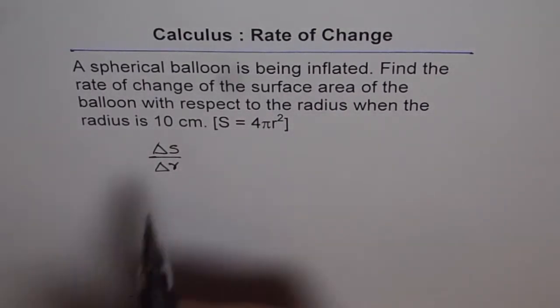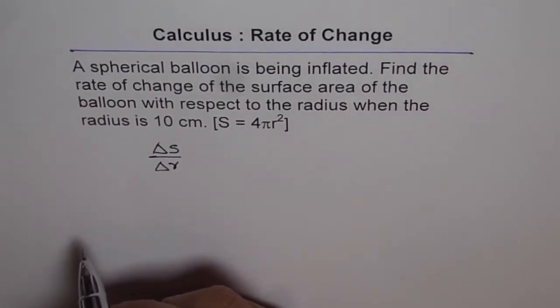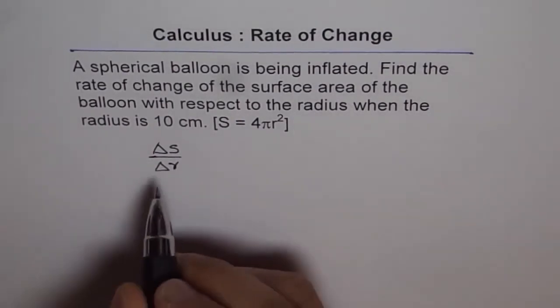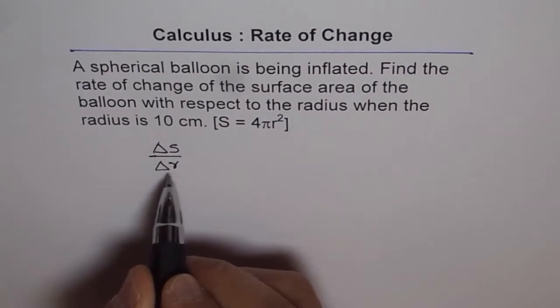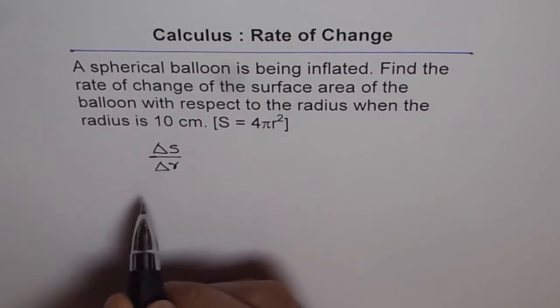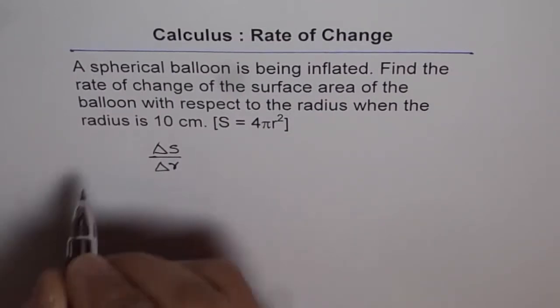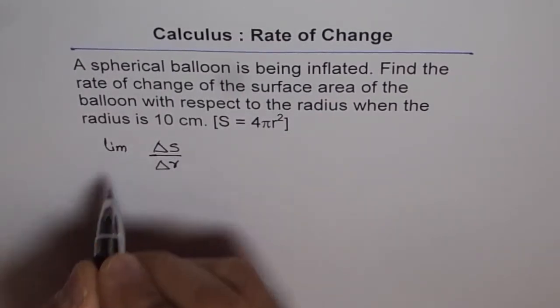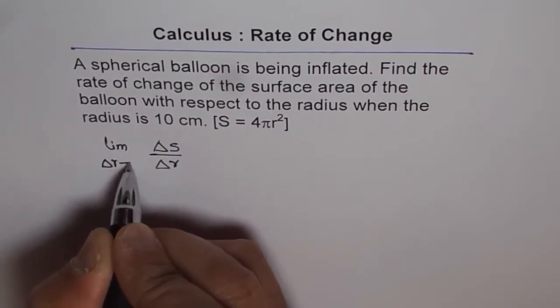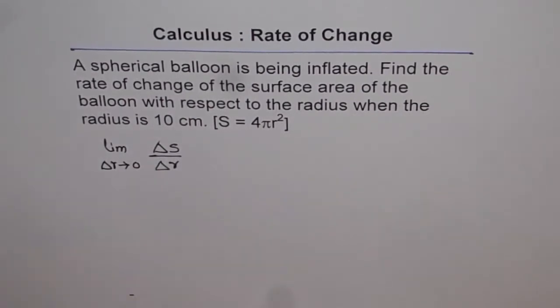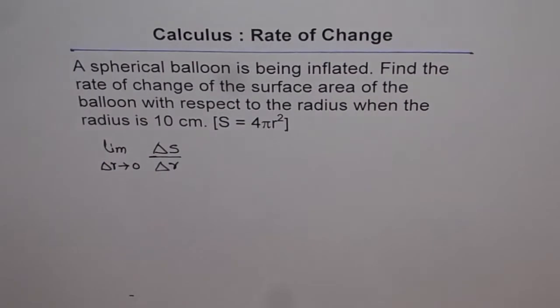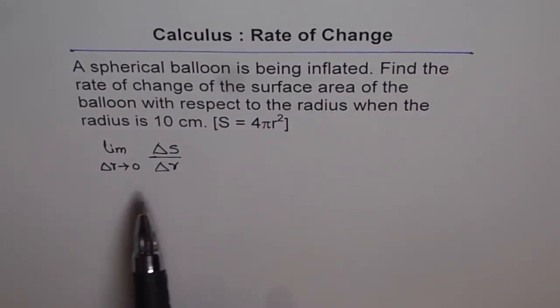Now, this rate of change is average rate of change. But if I decrease this value delta r to a very, very small number, then it becomes instantaneous rate of change. And so we can write this as where limit delta r approaches 0, right? So now this becomes the instantaneous rate of change of surface area with respect to radius.